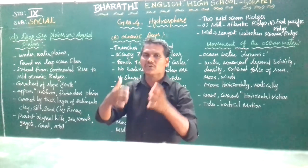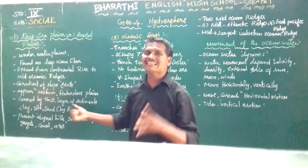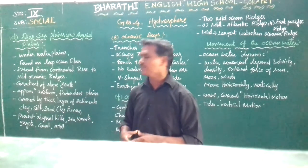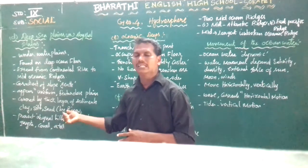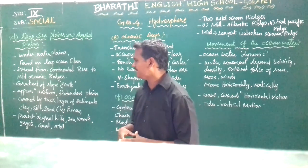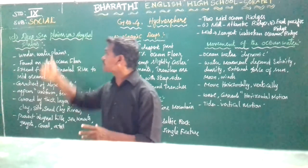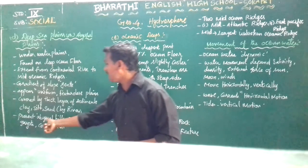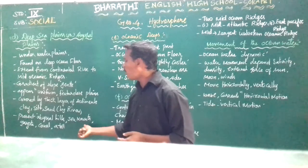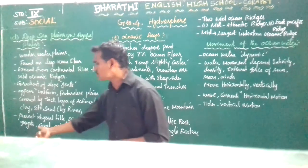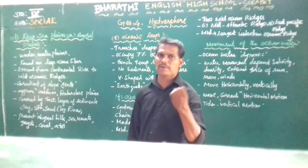Deep sea plains are mostly covered by a thick layer of sediment — clay, silt, sand and other materials — which are actually carried and deposited by rivers.